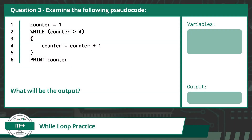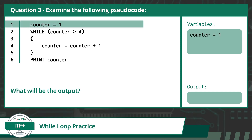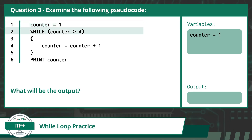Here is question 3. Examine the following pseudocode. What will be the output? If you want to try and solve this question on your own, pause this video now. Otherwise, I will go through the code line by line. In line 1, we declare a variable counter and assign it the value of 1. On line 2, we see a condition statement for a while loop. Our condition statement calls for our program to check if the variable counter is greater than 4.